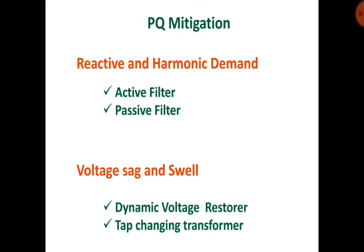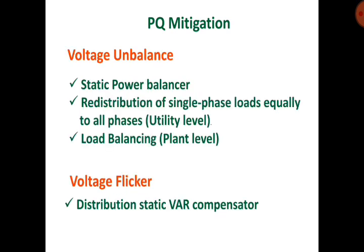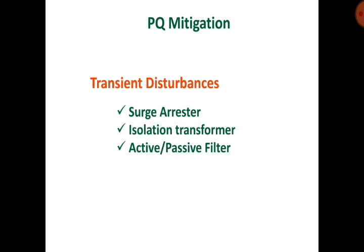Power quality mitigation: reactive and harmonic demand can be mitigated by active filter and passive filter. Voltage sag and swell can be addressed by a dynamic voltage restorer and tap-changing transformer. Voltage unbalance can be mitigated by a static power balancer, redistribution of single-phase loads equally to all phases at utility level, and load balancing at plant level. Voltage flicker can be mitigated by a distribution static VAR compensator. Transient disturbances can be addressed by surge arrestors, isolation transformers, and active or passive filters. This concludes the discussion on power quality issues.